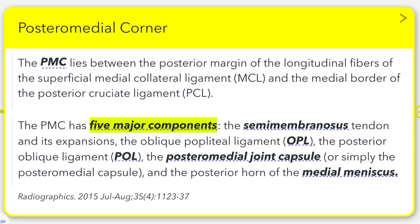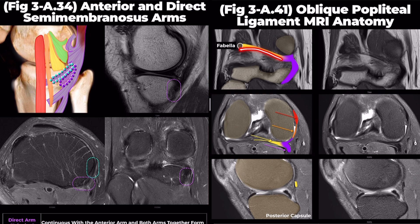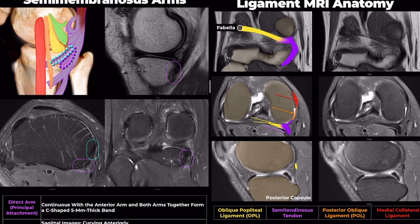Focusing on the posteromedial corner, we observe the semimembranosus tendon and its direct and anterior arms. The oblique popliteal ligament is highlighted in yellow. The semimembranosus tendon and its expansions are shown in purple. The posterior oblique ligament is highlighted in orange.